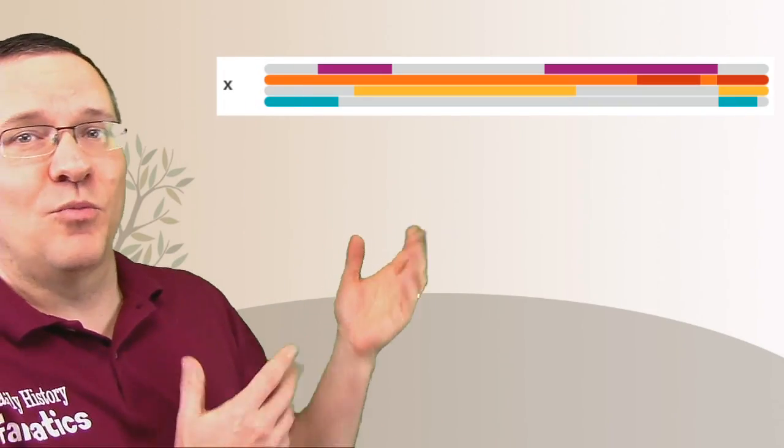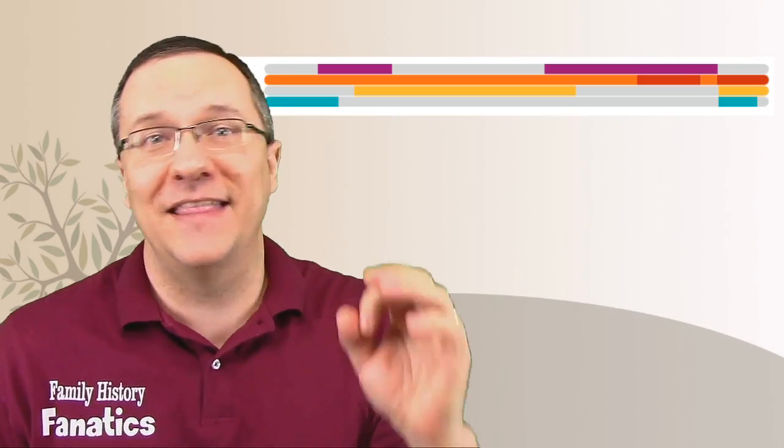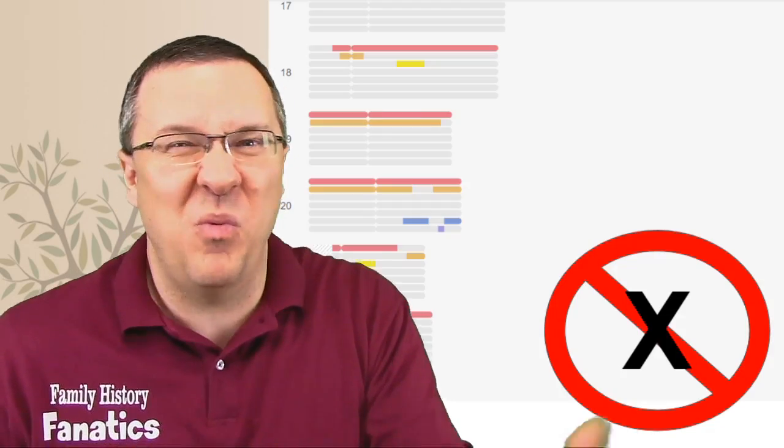If we go to 23andMe, we see that, hey, they've got the X chromosome right there for you, right at the bottom after all of the others. And they tell you the half match and the full match on that. So, you can get all the X information you need from 23andMe. But what about MyHeritage?